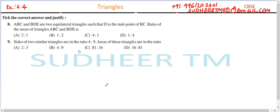Question number 8: Take the correct answer and justify. ABC and DEF are two equilateral triangles such that D is the midpoint of BC. So let us have a simple diagram here. I will draw a simple diagram of equilateral triangle ABC.